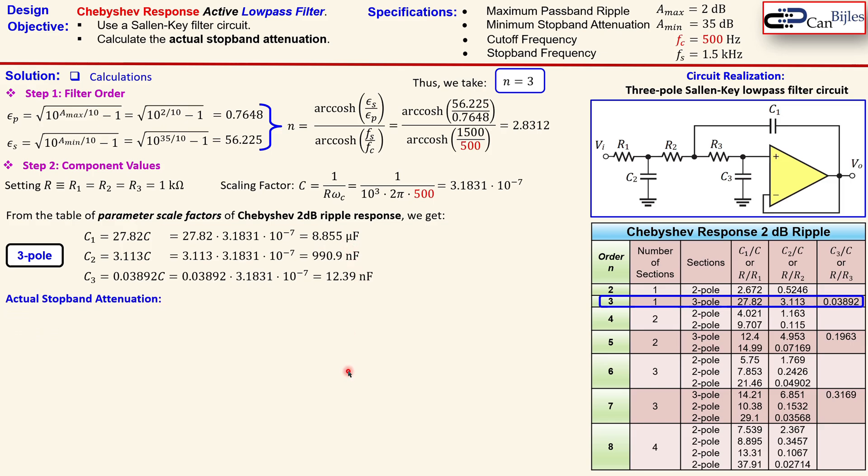So now the design is, by the way, completed. So we have all the components calculated. So we can now go to the actual stopband attenuation. This is the next step.